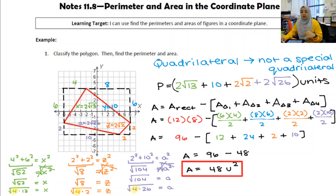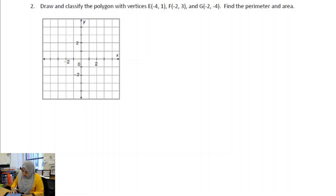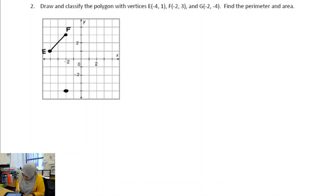For example 2, draw and classify the polygon with vertices E at (−4, 1), F at (−2, 3), and G at (−2, −4). Plotting those points and connecting them, it's clear that with three points this is a triangle. Then create a rectangle around the figure to find the perimeter and area.